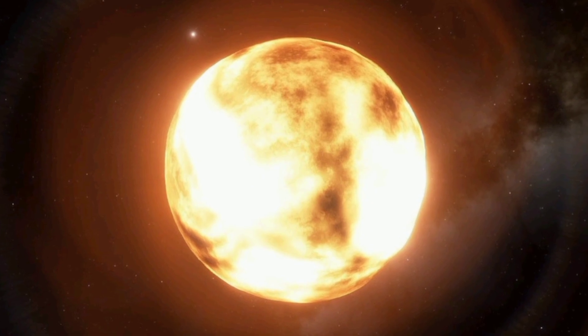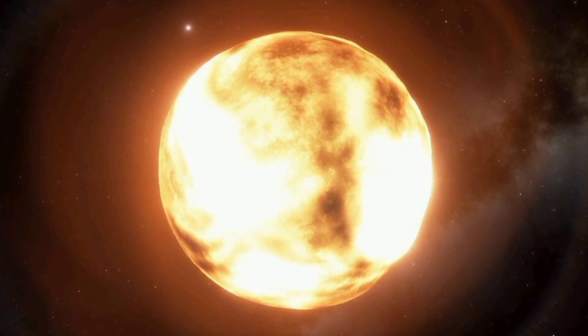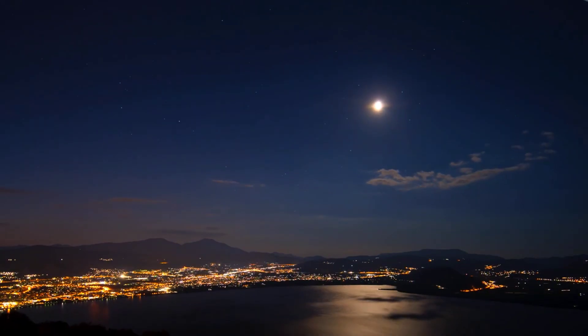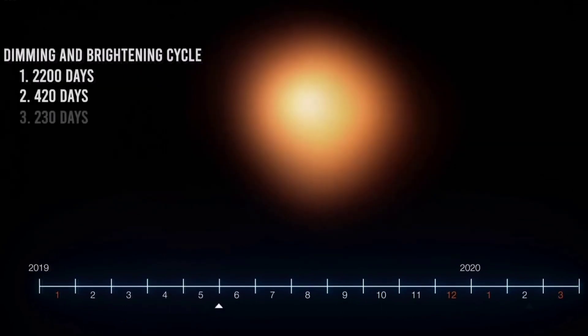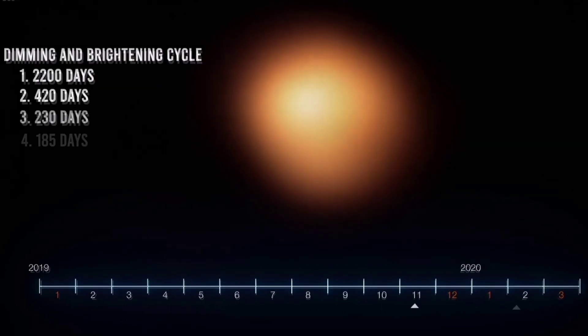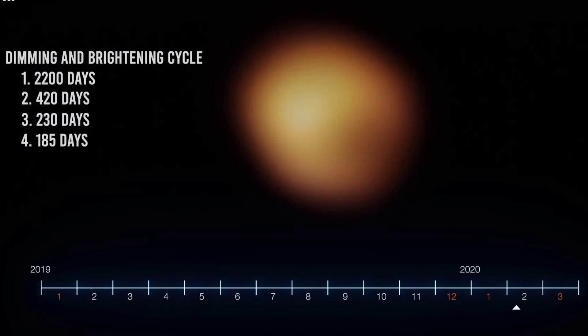This claim is based on the star's pulsations, indicating that Betelgeuse is behaving unstably, regularly expanding and contracting. Astronomers have observed changes in its brightness over the past century, noting various periods like 2,200 days, 420 days, 230 days, and 185 days.